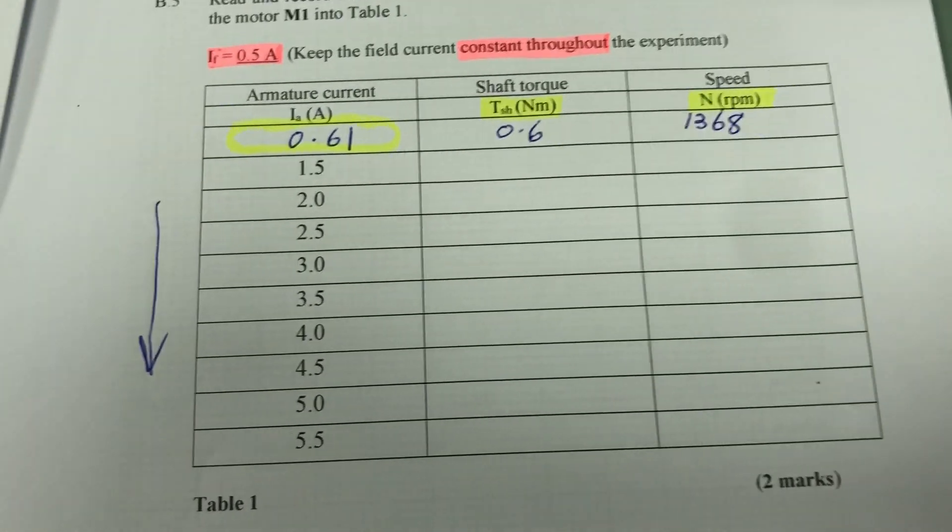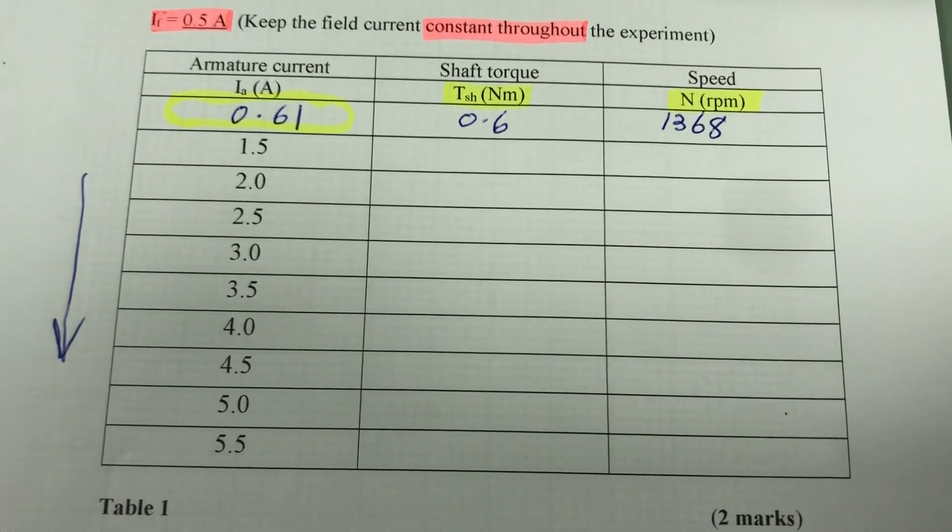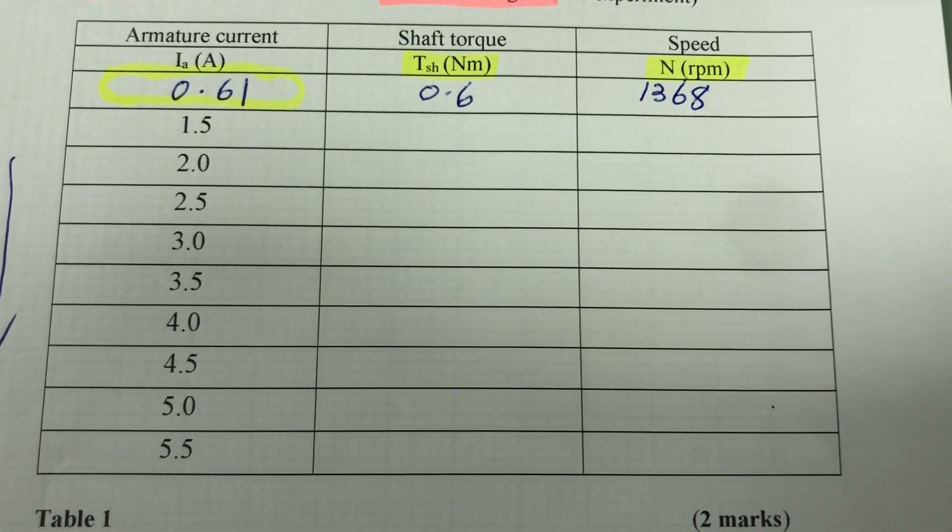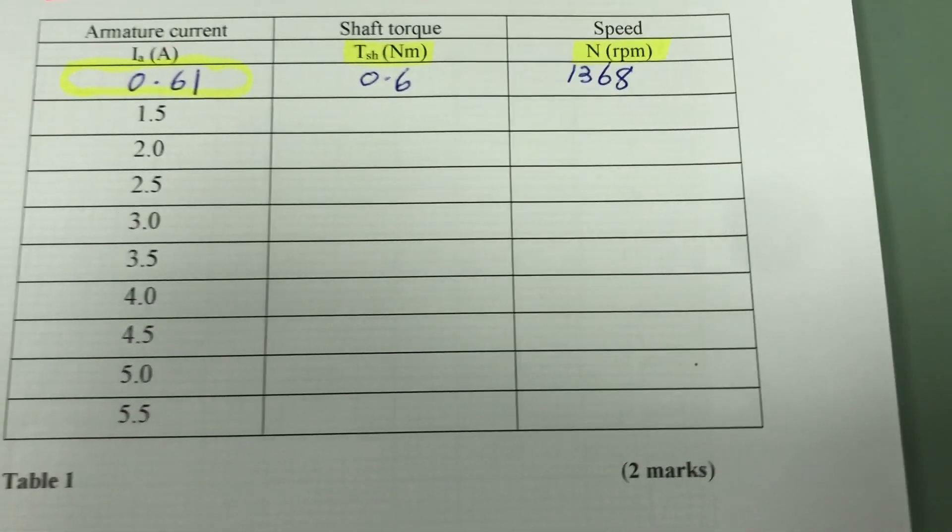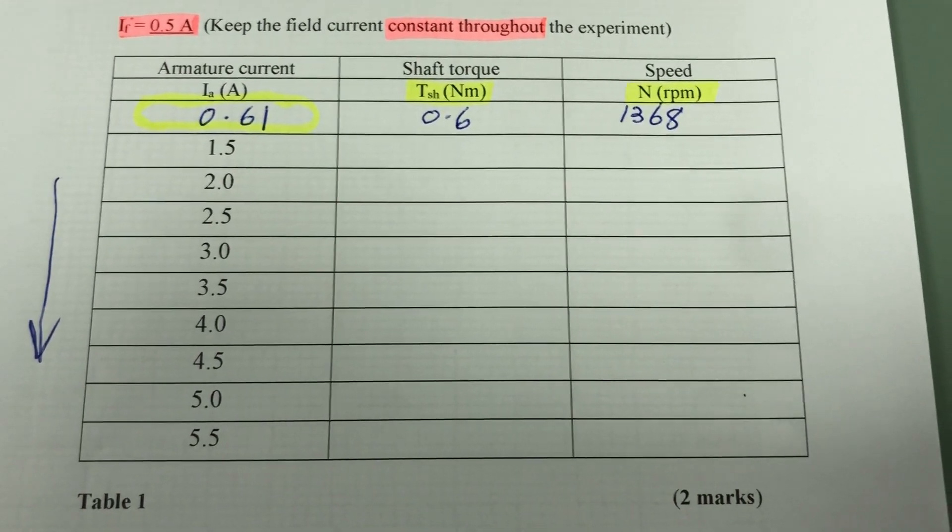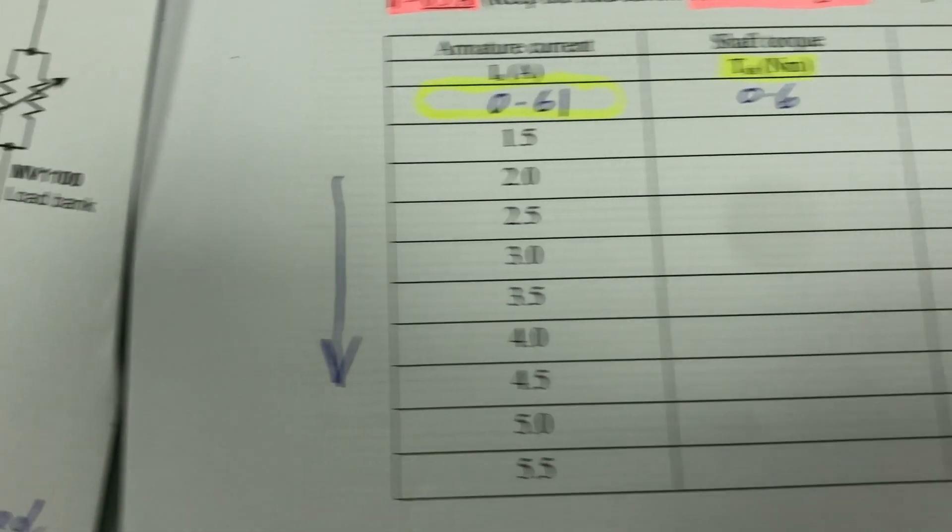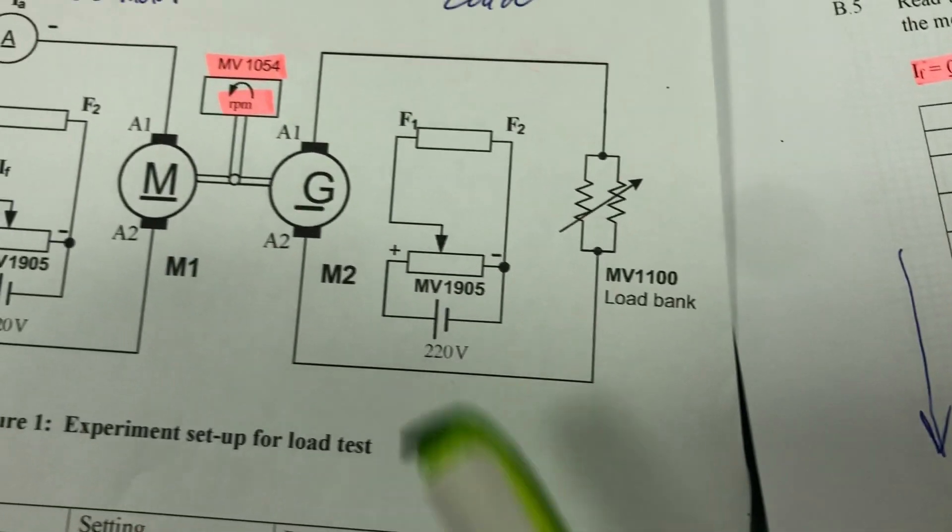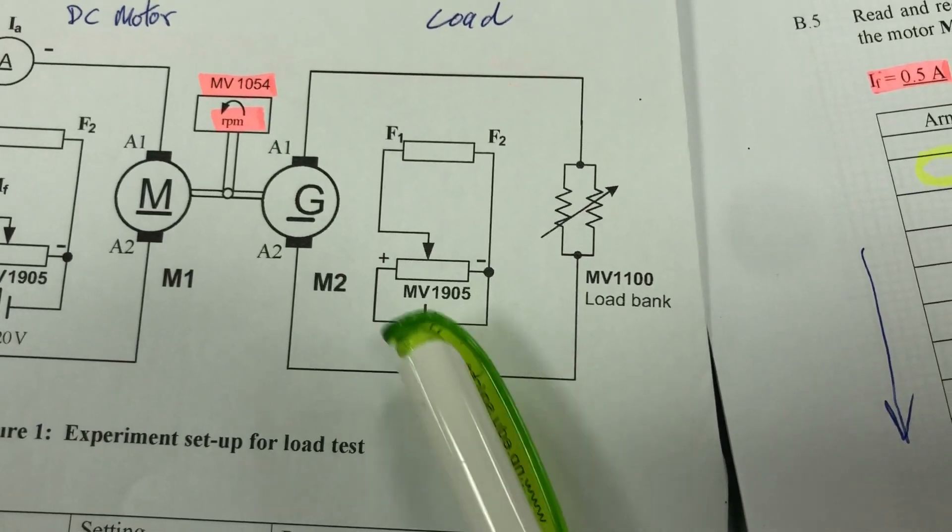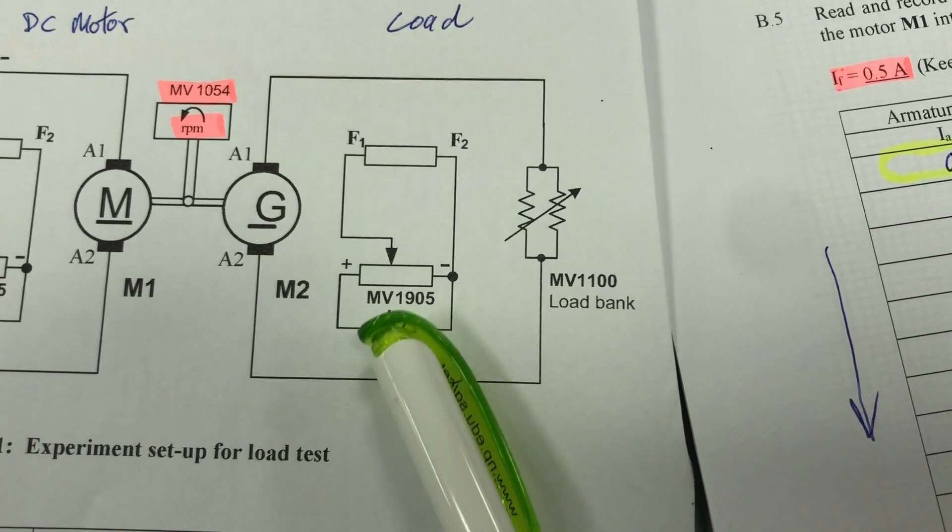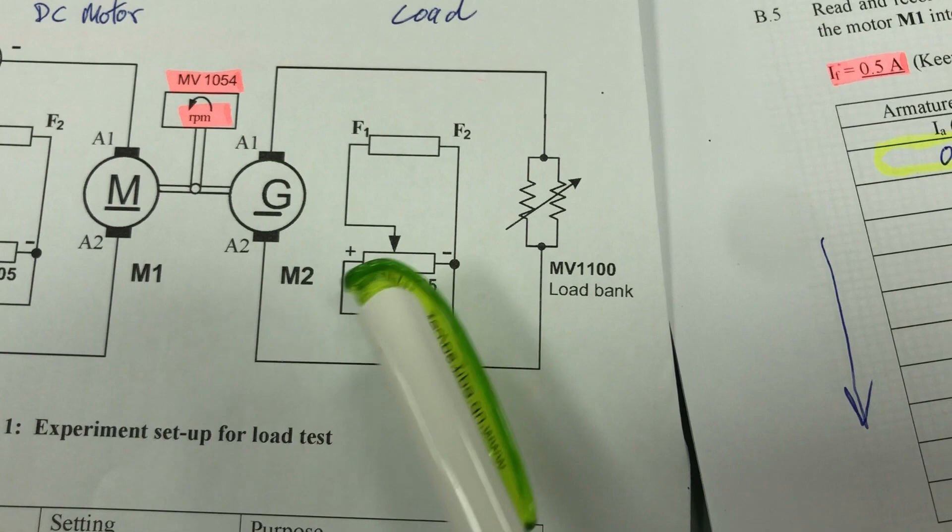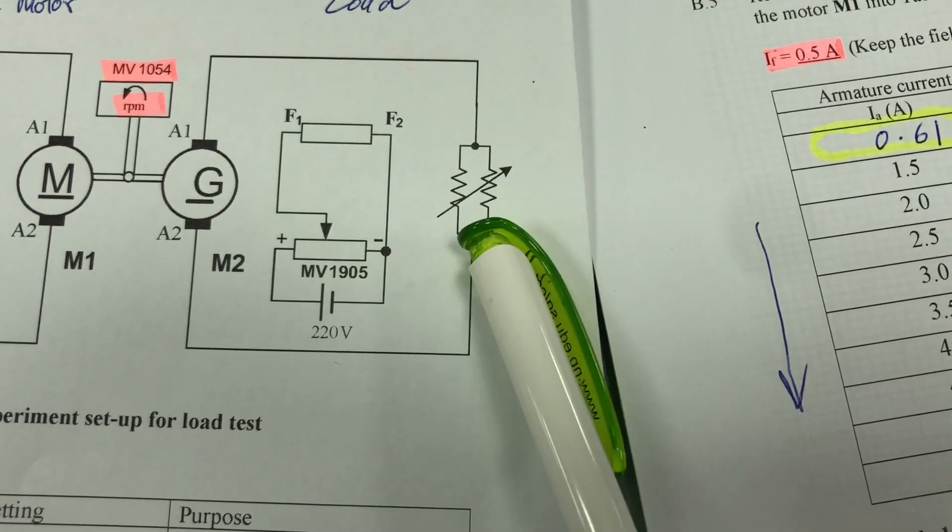Okay, next reading, we are going to increase the armature current to 1.5A and we are supposed to increase the field circuit of the generator to provide the load, increase load. Then when this is maxed out, we will move to the load bank.